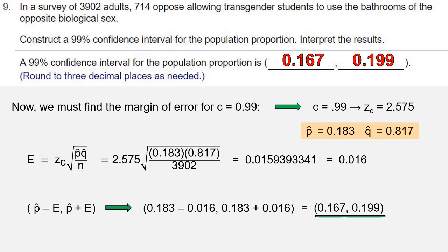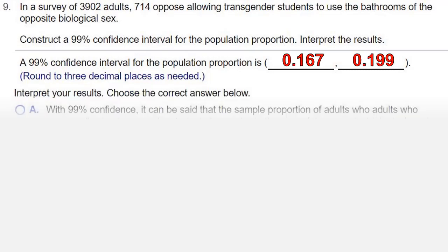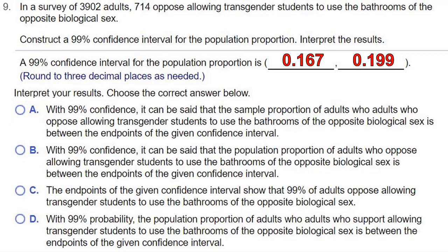Then we need to interpret the results. So remember, when we find a confidence interval, the level of confidence tells us how certain we are that the value of the population proportion falls between the bounds of our interval.